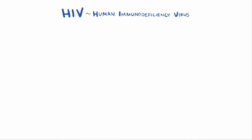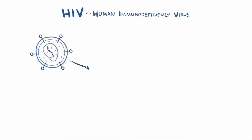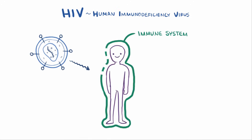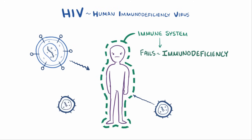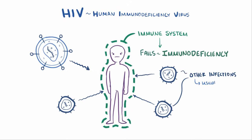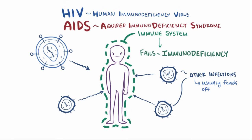HIV, or human immunodeficiency virus, is a virus that targets cells in the immune system. Over time the immune system begins to fail, which is called immunodeficiency, and this increases the risk of infections and tumors that a healthy immune system would usually be able to fend off. These complications are referred to as AIDS, or acquired immunodeficiency syndrome.